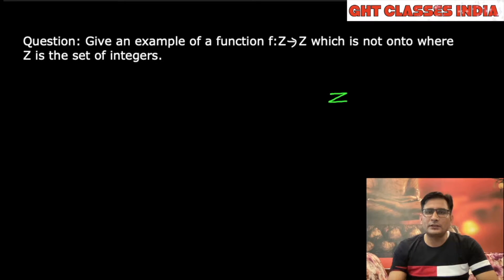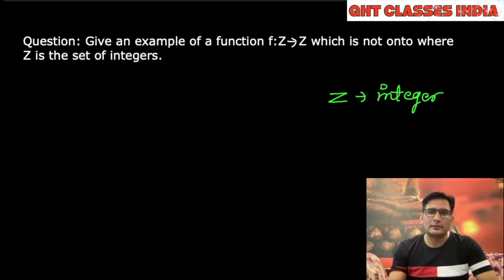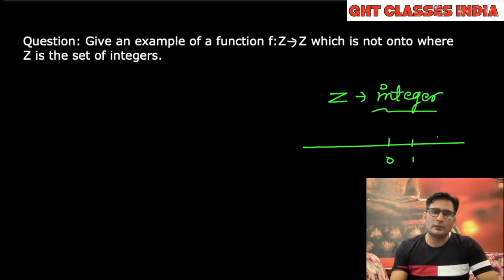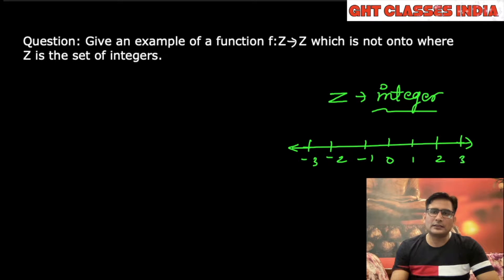Z is given in the question. Z means integer. Integer means any number: 0, 1, 2, or any number like minus 1, minus 2, minus 3, and so on. So these are the integers.